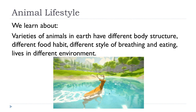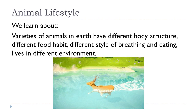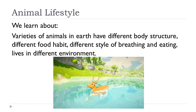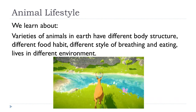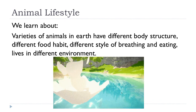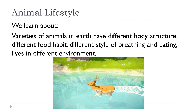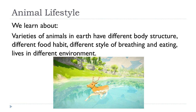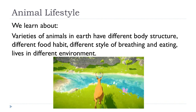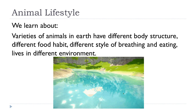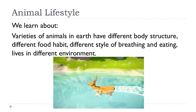Animals have certain organs in their body by which they perform these life functions. Not all animals have similar organs. For example, the breathing organ of a dog is very different from that of a fish. Nature has provided animals with organs that help them adjust to the environment in which they live. The environment in which an animal or a plant lives is called its habitat.